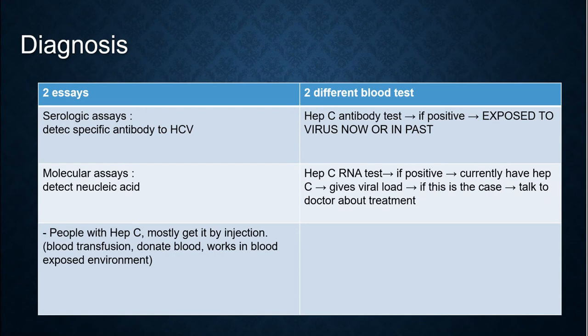There are two different blood tests. The hepatitis C antibody test — if positive, means exposed to the virus now or in the past. The hepatitis C RNA test — if positive, means currently has hepatitis C and gives the viral load. If this is the case, talk to the doctor about treatment right away.